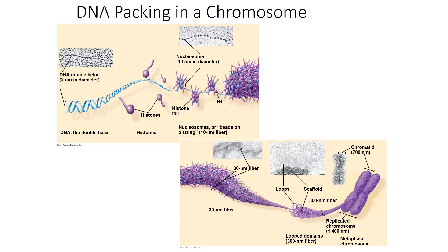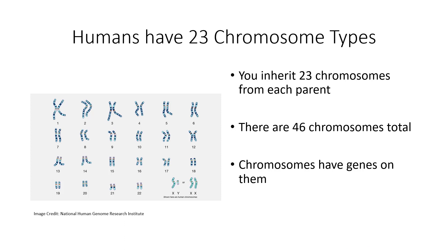There are two chromatids in a replicated chromosome. A chromatid is going to be half of a chromosome when that chromosome is ready for division. During normal situations, when the cell is not dividing, you'll just have a chromosome without two chromatids. We have 23 chromosome types — you get one from your mother and one from your father, so 23 chromosomes from each parent, meaning 46 chromosomes total. Chromosomes have genes on them encoded in the DNA code.